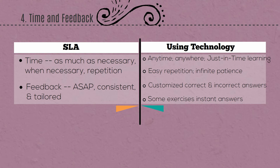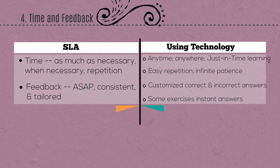The example I always give pertains to pronunciation software. In class, if a student asks me to pronounce 'assistance,' I say 'assistance.' When asked again, I may alter my pronunciation slightly — and when asked a third time I'm practically yelling, 'ASSISTANCE!' — another pronunciation changed. On the other hand, the computer doesn't get annoyed by repetitive requests and does not change the pronunciation each time.